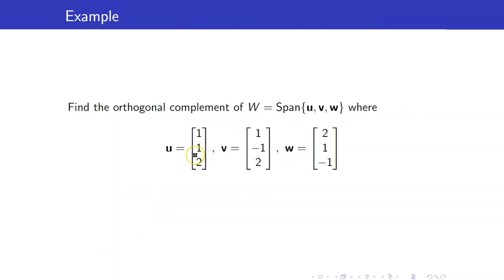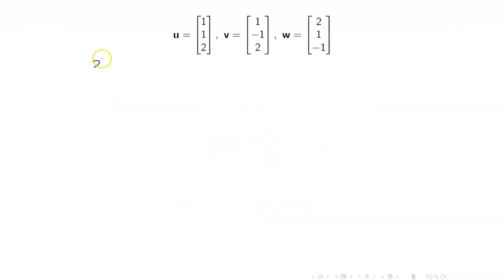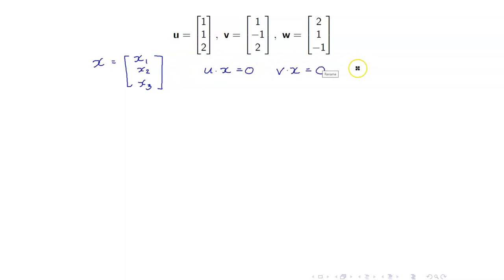Let me illustrate that. Suppose u, v, and w are our vectors and we want to find w-perp, where w is the span of u, v, and w. According to the theorem, to get w-perp we find all vectors x orthogonal to u, v, and w. Let x = (x1, x2, x3). We need u·x = 0, v·x = 0, and w·x = 0. I will do the long method first, then show how the theorem gives w-perp as the null space of A-transpose.